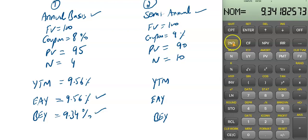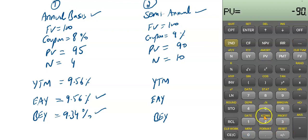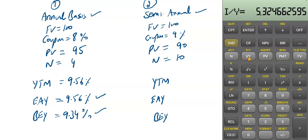Now for Bond 2, the semi-annual bond: FV = 100. Since coupon is 9% on a semi-annual basis, take half — PMT = 4.5. PV = -90. N = 10 years, so it becomes 20 periods. Computing I/Y gives 5.32. Multiplying by 2 gives approximately 10.65. So the YTM — the nominal yield — is 10.65%.